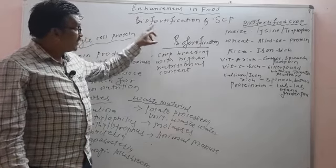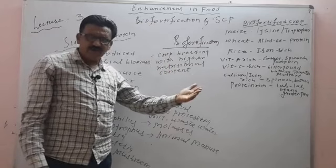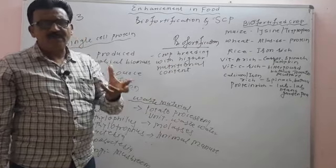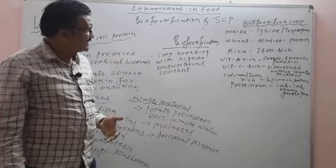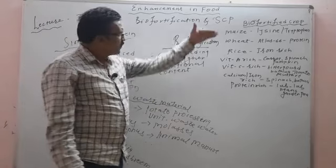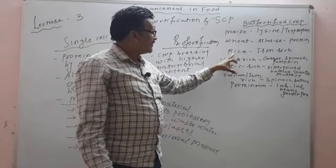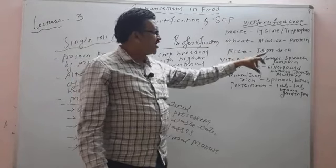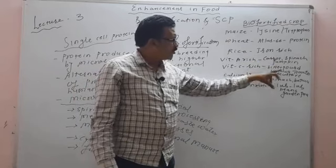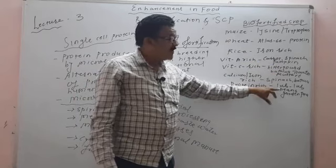Bio-fortification means it is the crop breeding method in which nutritional content of the crop plant variety increases. Bio-fortified crops include wheat, rice, carrot, spinach, pumpkin, bitter gourd, bathua, tomato, mustard, and beans.